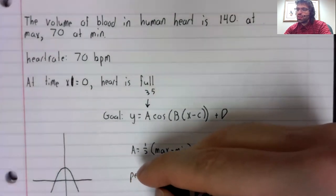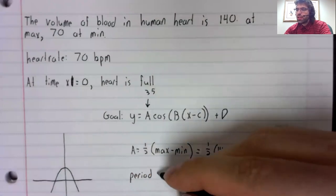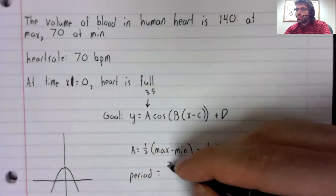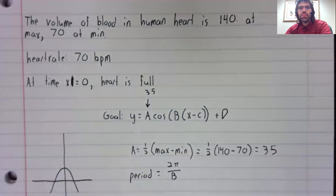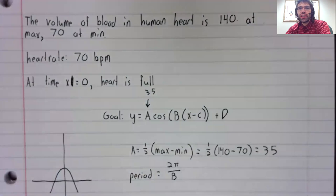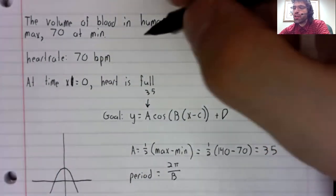B is a little more work. We know that the period is 2π divided by B. But we're not explicitly given any information about the period. However, we're given the frequency.